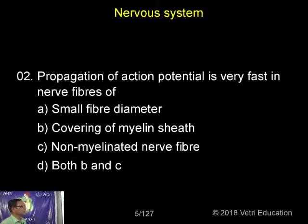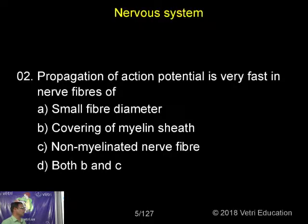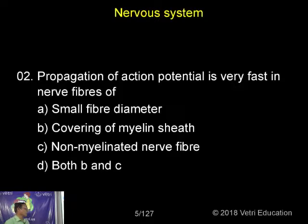Propagation of action potential is very fast in nerve fibers of small diameter with a covering of myelin sheath, non-myelinated nerve fiber, or both B and C?